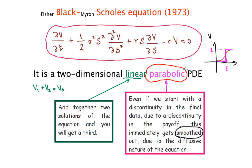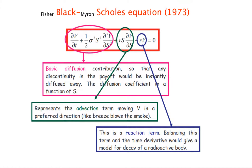It's interesting to look at the different contributions that appear in the Black-Scholes equation. For example, one contribution looks like a simple diffusion equation — a basic diffusion contribution. Due mainly to this term, any discontinuity in the payoff will be instantaneously diffused away. Note that unlike a standard diffusion equation, the coefficient depends on the asset value S, not a constant.